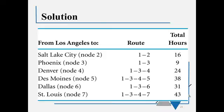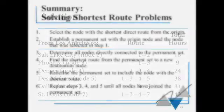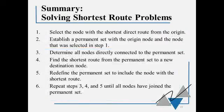So this gives us the shortest route to all the cities in our model. Again, a summary on how to solve a shortest route problem. We want to start at the origin. We select the node with the shortest direct route. We establish a permanent set. The origin is our first permanent set, and then the node that was selected in step 1 gets added. We figure out which nodes are directly connected to the permanent set. Find the shortest route from the permanent set to the new destination node. Really, we want to find the shortest route in total from the origin. We want to redefine our permanent set, and then we're going to keep repeating that until every point is in the permanent set.